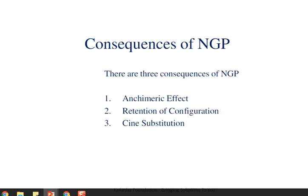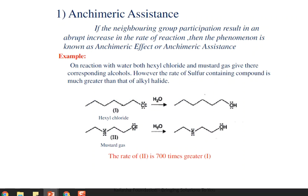Now, what are the consequences of neighboring group participation? There are three main effects: first is the anchimeric effect, second is retention of configuration, and the third is syn substitution. Let's see each one by one.